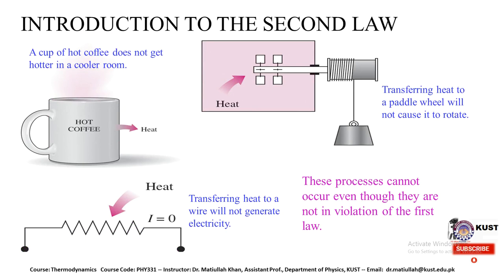First we need to know some natural processes that lead to the second law of thermodynamics. If we look in our daily life, if we have a cup of coffee at a higher temperature than the room temperature, then normally after keeping the cup of coffee for a longer time in that environment, it reduces in temperature and heat flows from the cup of coffee toward the environment. This flow of heat continues until both achieve the same temperature. In some cases we convert mechanical work into heat, but transferring heat to a wire will not generate electricity.